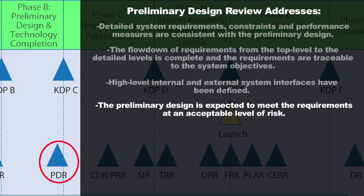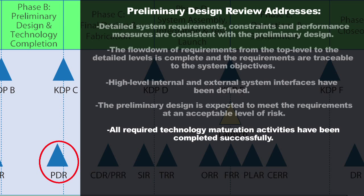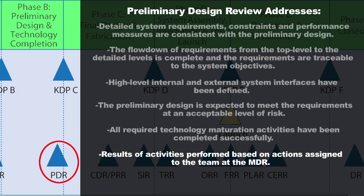The review team is going to be looking to see that you've got a design that could really be matured through implementation at an acceptable level of risk — defined as within the amount of money and schedule while meeting technical performance. They're also going to be looking to see that all required technology maturation activities have been completely done, all testing of technologies has been completed, and that you're ready to go into implementation. They'll also be looking to see that results of any actions given back in your Mission Design Review in Phase A have been completed, so you have no further things to close out from the previous review.